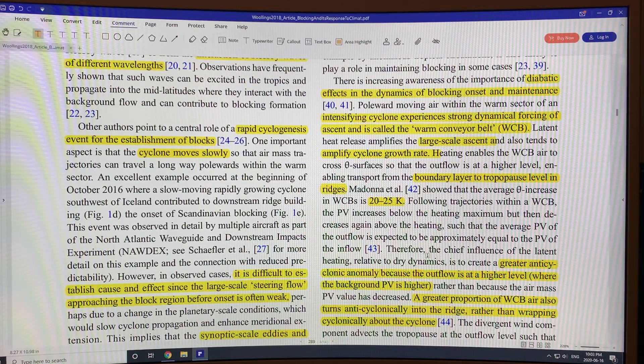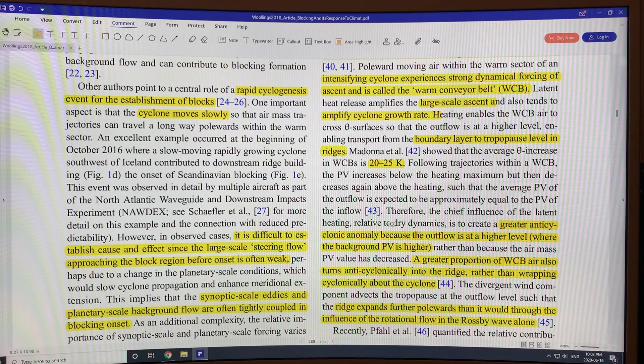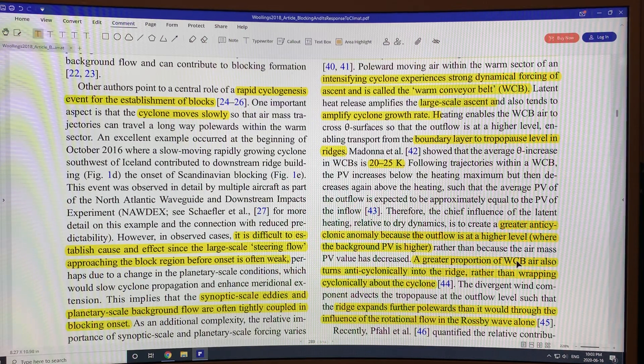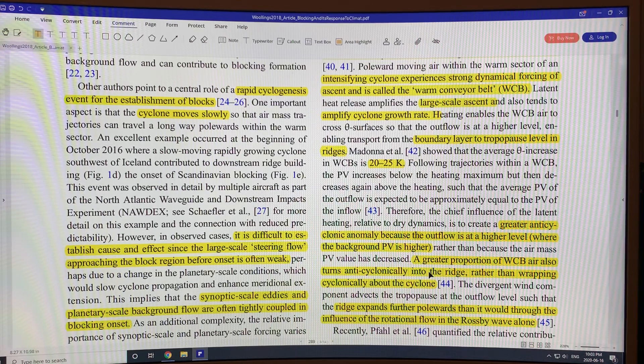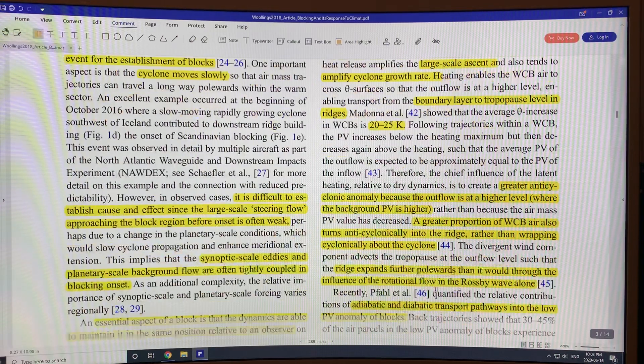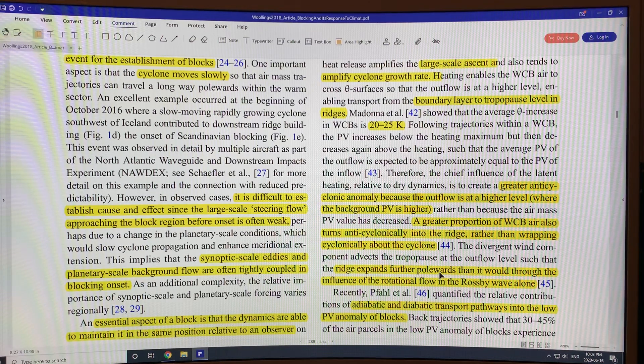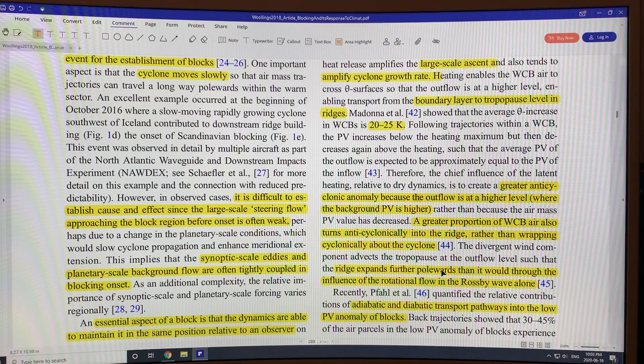A lot of the work on blocks has been for dry air. But the warm conveyor belt air contains a lot of moisture. So you can't consider just the dry situation. The moisture is thought to have a large effect in the blocks, in the development of the blocks, the maintenance of the blocks, and also why they dissipate.